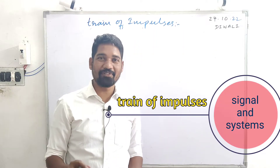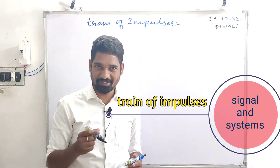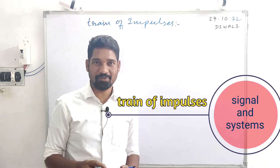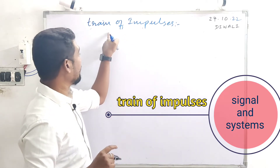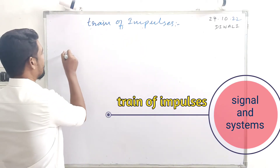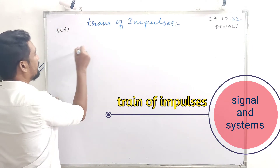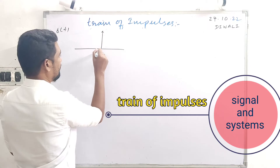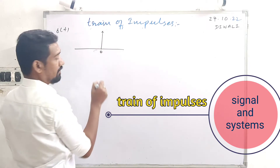Hi, yet another important video from Signals and Systems series. One of the important topics from the exam point of view: exponential Fourier series of a train of impulses. If it is δ(t), it's simply a single impulse at zero.